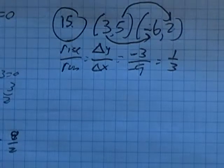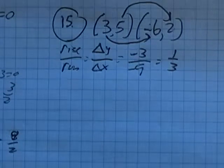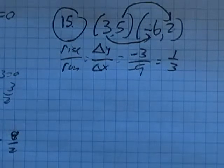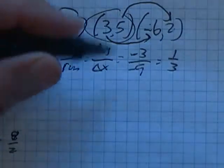And so the directions didn't specify what style to put the line in, what form. So I'm just going to pick a point and put it into point-slope form.